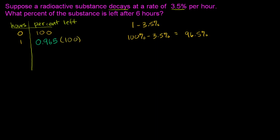Now what happens in hour 2? Well, we're going to have 96.5% of the previous hour. We will have lost 3.5%, which means that we have 96.5% of the previous hour, so it'll be 0.965 times this, times 0.965 times 100.